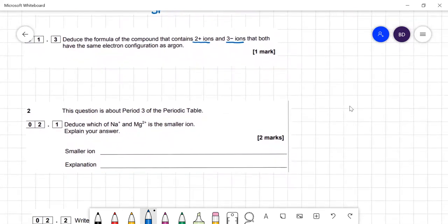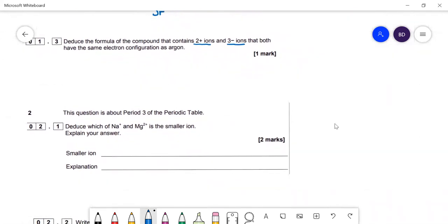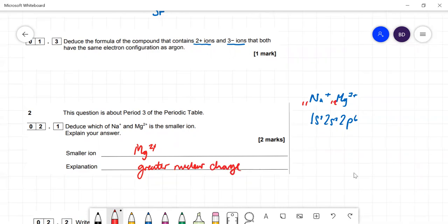Which of Na+ and Mg2+ is the smaller ion? They both have the same electronic configuration, but magnesium has 12 protons in the nucleus, sodium only 11. So Mg2+ is smaller due to greater nuclear charge holding those electrons in more strongly.